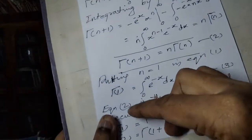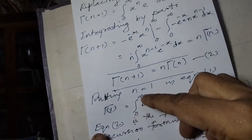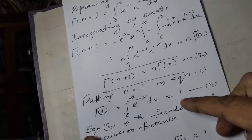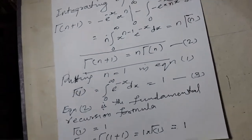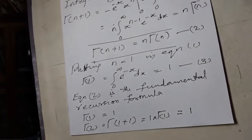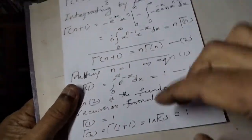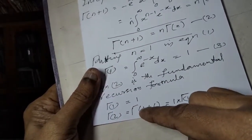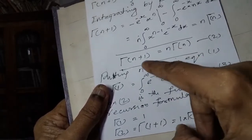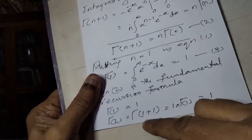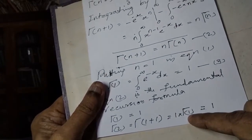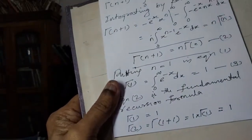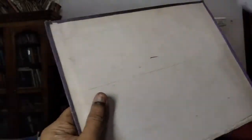Gamma(1) equals the integral from 0 to infinity of e raised to minus x dx. Integrating with the given limits gives gamma of 1 equals 1. For gamma(2): gamma of 1 plus 1, using the recursion gamma(n+1) = n·gamma(n), gives 1 times gamma(1) = 1 times 1 = 1. So gamma(2) equals 1.